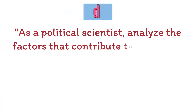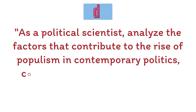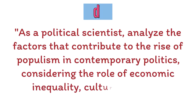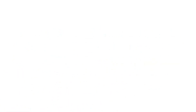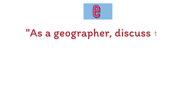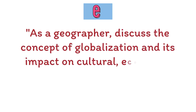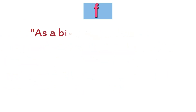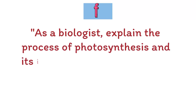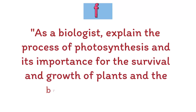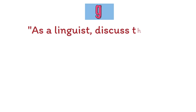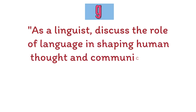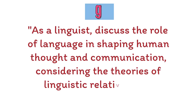D. As a political scientist, analyze the factors that contribute to the rise of populism in contemporary politics, considering the role of economic inequality, cultural identity, and media. E. As a geographer, discuss the concept of globalization and its impact on cultural, economic, and political systems around the world. F. As a biologist, explain the process of photosynthesis and its importance for the survival and growth of plants and the broader ecosystem. G. As a linguist, discuss the role of language in shaping human thought and communication, considering the theories of linguistic relativity and universal grammar.